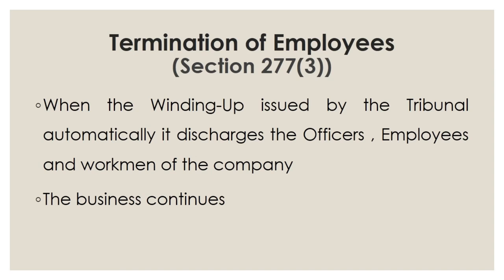Next is termination of employees, mentioned under section 277 subsection 3. When the tribunal issues a winding up order for a company, it automatically discharges the officers, employees, directors, and workmen of the company. However, the business always continues under the control of the liquidators.